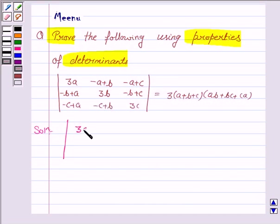By the properties of determinants, we know that if we apply any row operation or column operation to the determinant, its value doesn't change. It remains the same. So, we can apply any row operation or column operation to simplify the given determinant.